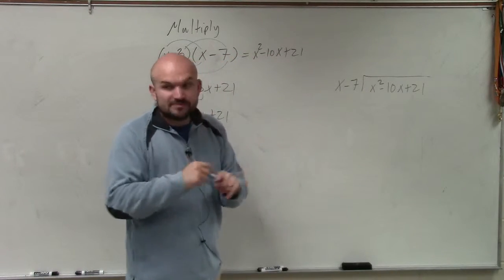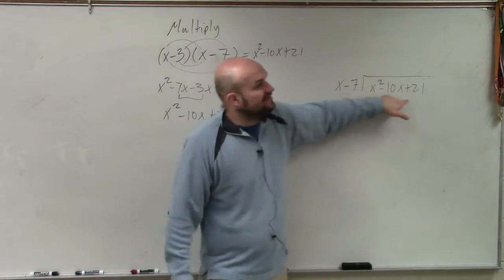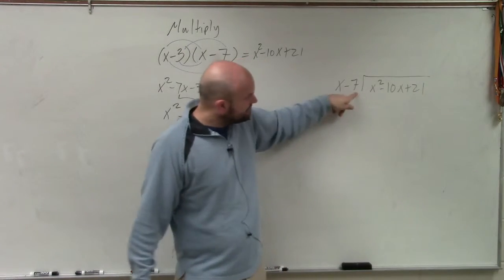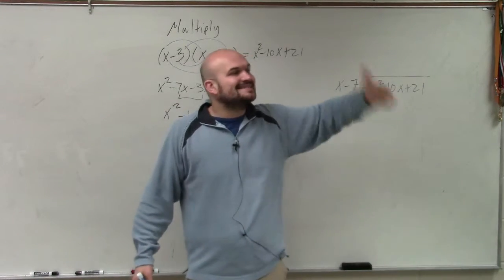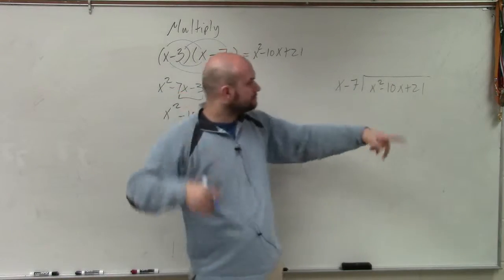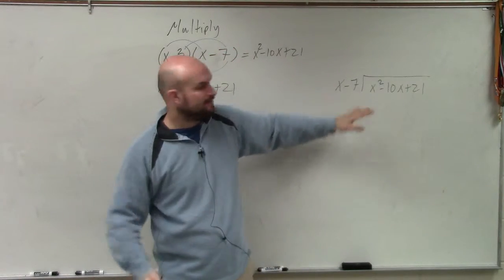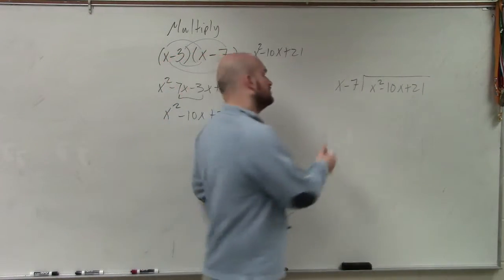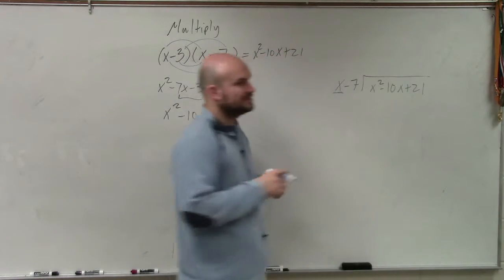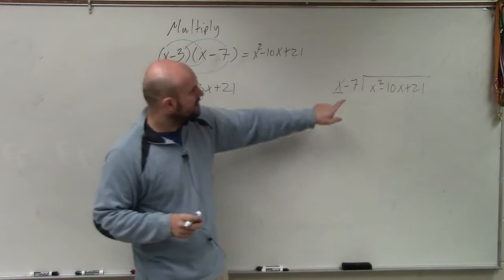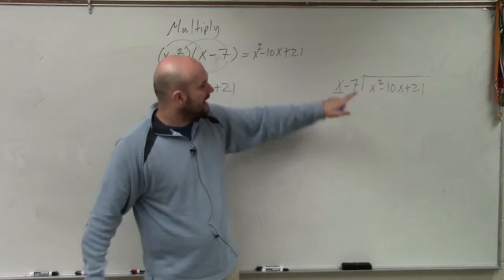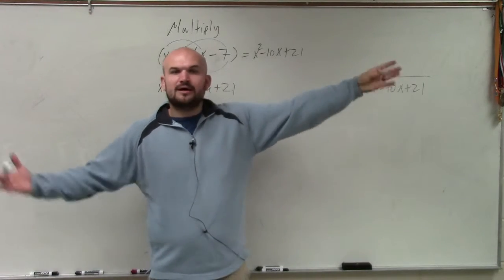The first thing we always have to do is make sure that our dividend and divisor are in descending order from highest exponent down. And we say, check. We're good. So now what we do is we take our leading term of our divisor, which in this case is going to be x, and we're going to divide it into x squared. And we say x divides into x squared how many times?